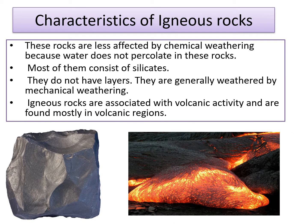Igneous rocks are less affected by chemical weathering because water does not percolate in these rocks. Most of them consist of silicates. Igneous rocks do not have layers. They are generally weathered by mechanical weathering by agents such as temperature, frost action and winds. These rocks are associated with volcanic activity and are found mostly in volcanic regions.